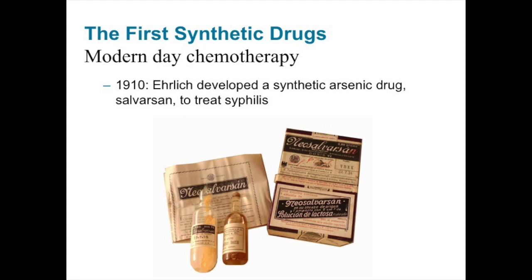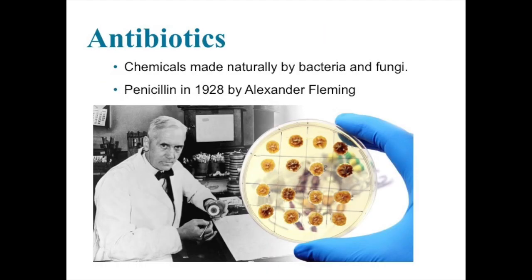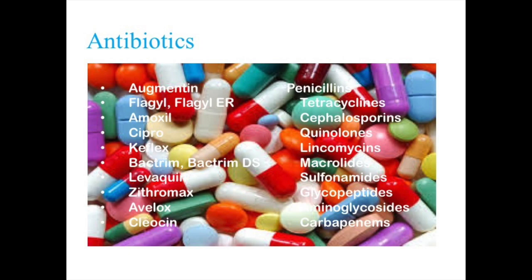This was the beginning of modern-day chemotherapy — the treatment of disease with chemicals. Some chemicals are called antibiotics when made naturally by bacteria and fungi. The first antibiotic discovered was penicillin in 1928 by Alexander Fleming. Since then, many other antibiotics and chemotherapeutic drugs have been discovered.